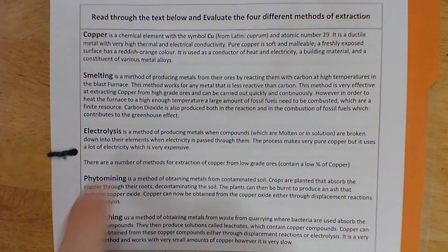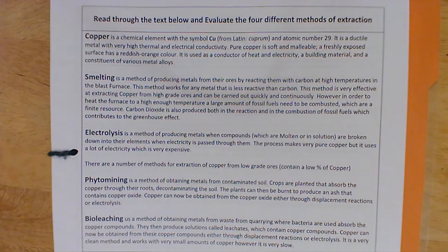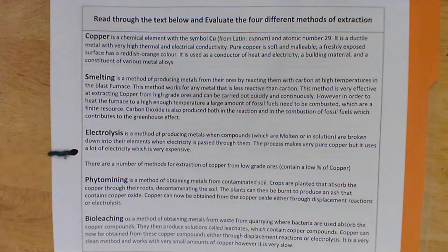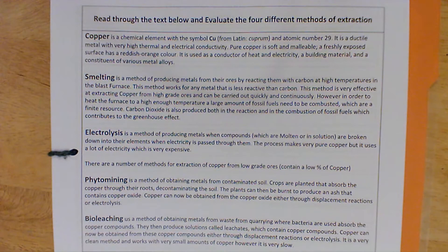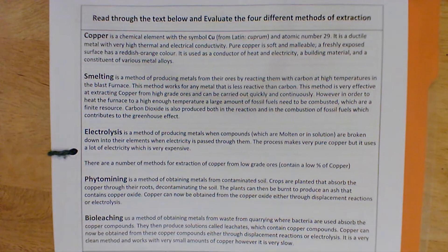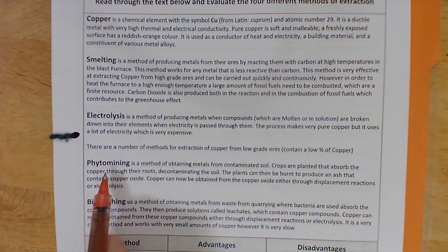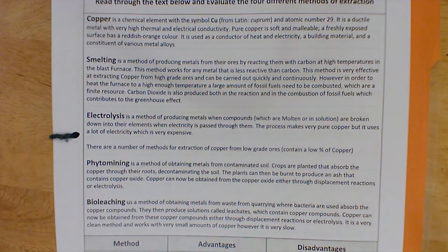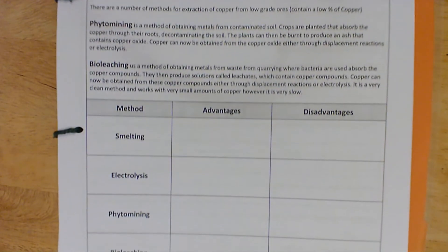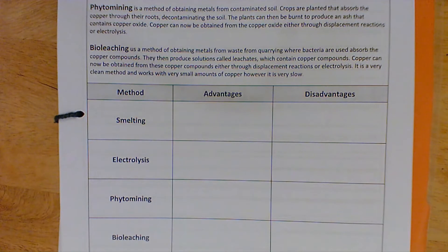On this page we have four different methods for extracting metals, and the example we're going to use for all four is copper. We have smelting — reduction by carbon in the blast furnace — and molten electrolysis, which are the two methods we've already discussed. We're also introducing two alternative processes: phytomining and bioleaching. I'd like you to read through the text and for each method pick out the advantages and the disadvantages.